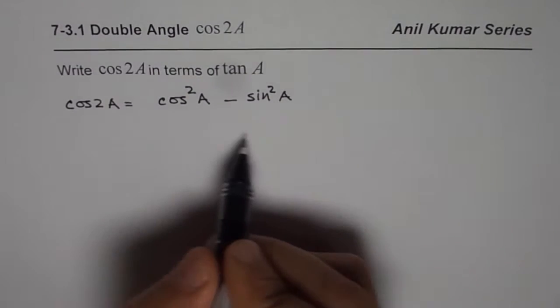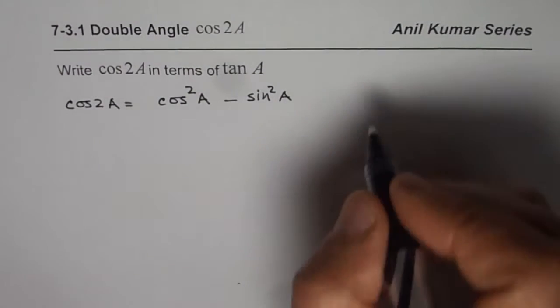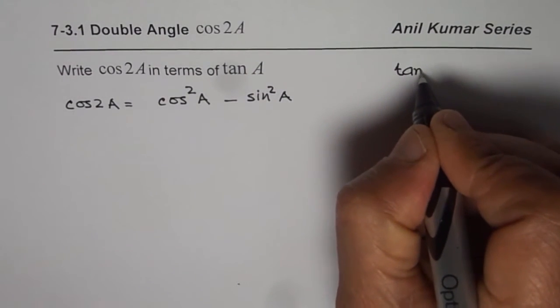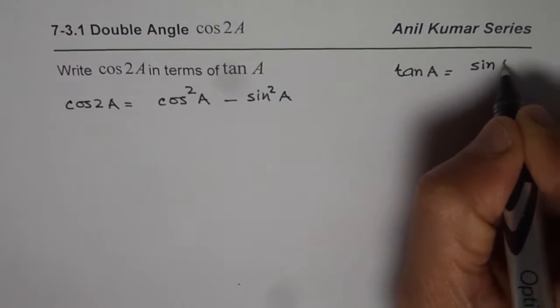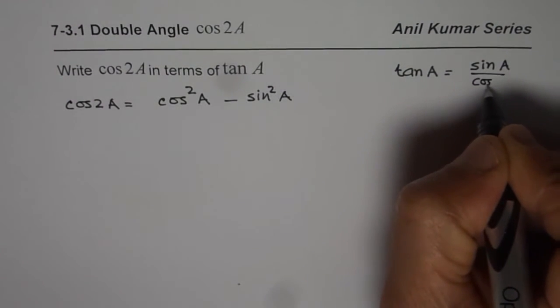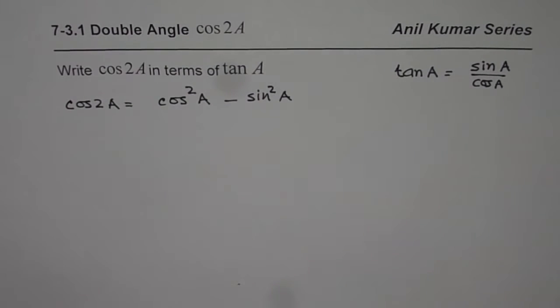Now we want to write this in terms of tan. So what is tan? That is the thinking part. Tan is sin A over cos A. That is how we can get tan.